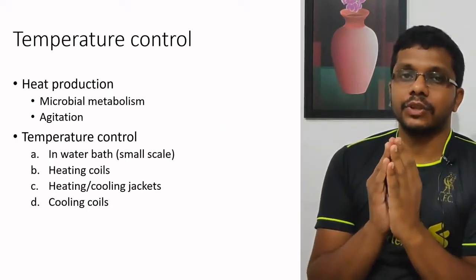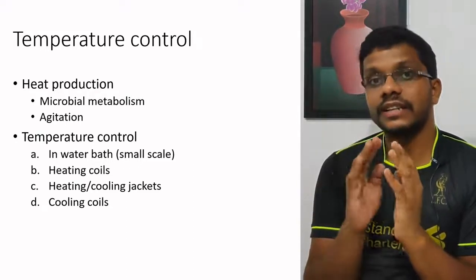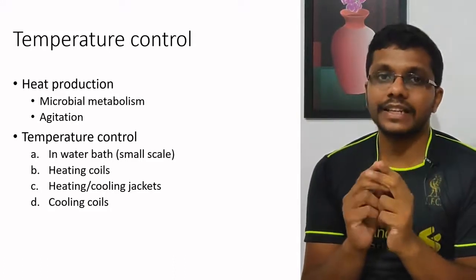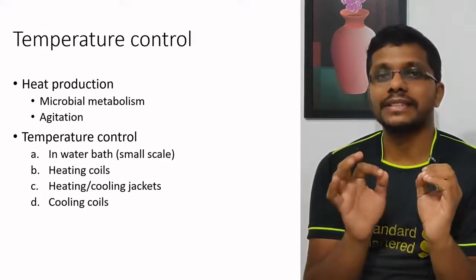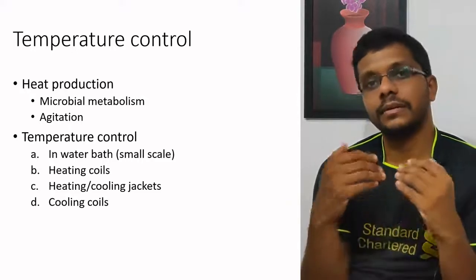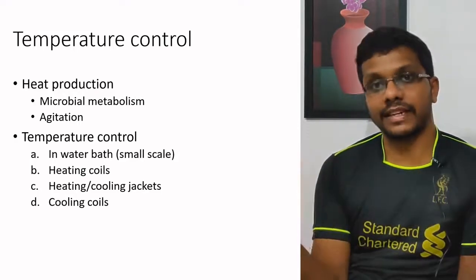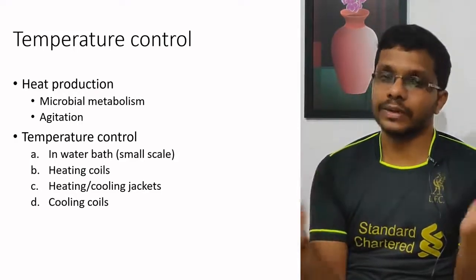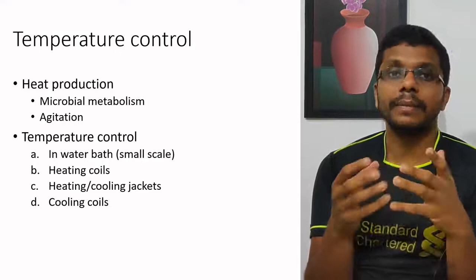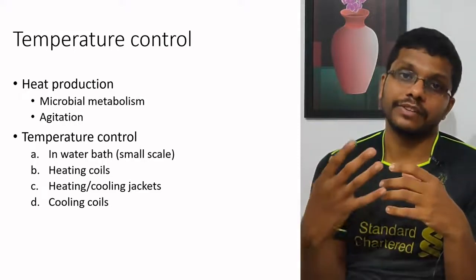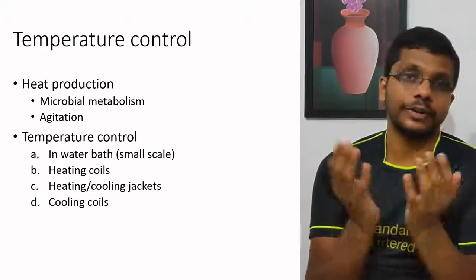Every fermenter should have some mechanism for temperature control. As the microorganism grows, temperature will accumulate in the fermenter. This is due to two reasons: first, microbial metabolism is exothermic in nature, so as microorganisms grow, heat accumulates. As fermenter size increases, heat accumulation also increases. If the temperature rises above the optimal temperature of the microorganism, microbial growth and product formation will both be inhibited. To avoid that, the fermenter should have mechanisms to control temperature.